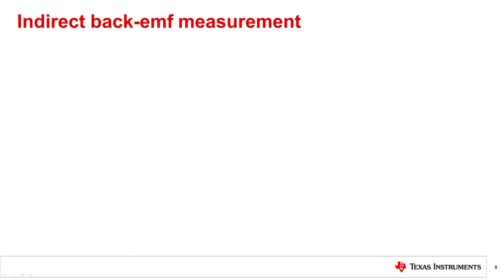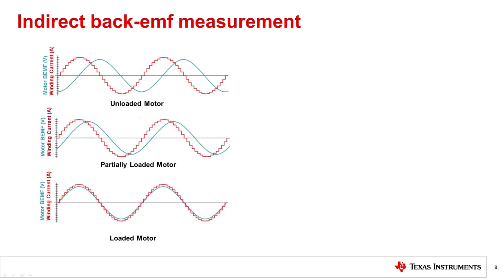Indirect back EMF measurement utilizes the relationship between the winding current, back EMF, and the mechanical torque load of the motor to detect a stall condition. As shown in the figure, the back EMF is 90 degrees out of phase with the winding current for an unloaded motor. The back EMF phase shift will start to decrease as the load increases. Finally, as the load approaches the motor's pullout torque at a given winding current, the back EMF will move in phase with the winding current.